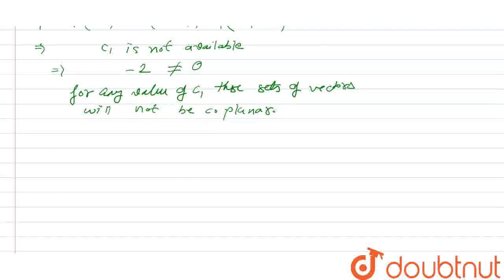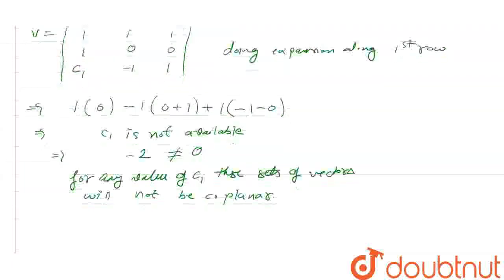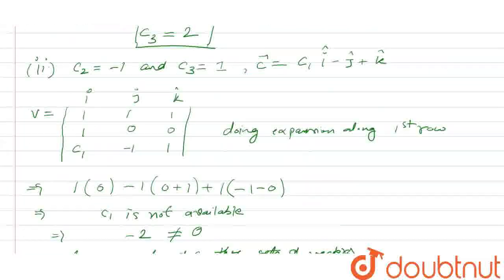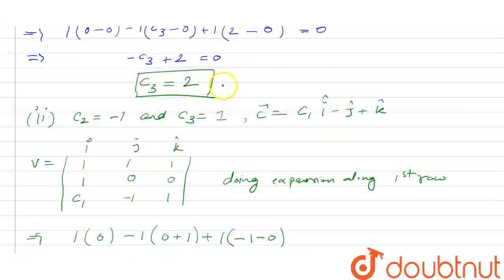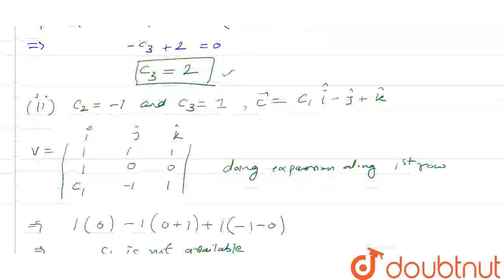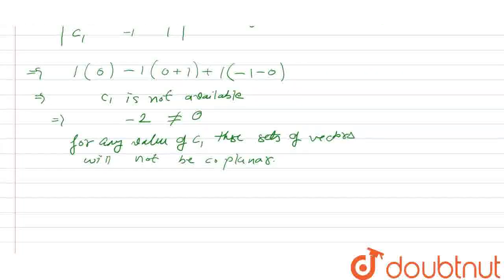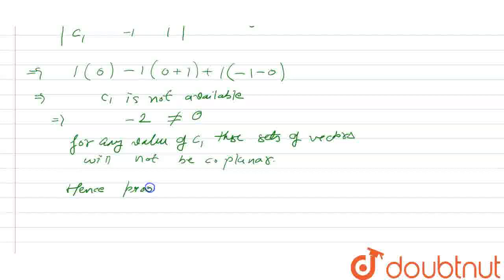So for any value of C1, this set of vectors will not be coplanar. We get no value of C1 that makes it coplanar. In the first part, C3 equals 2, and in the second part, no value of C1 makes A, B, C coplanar. Hence proved.